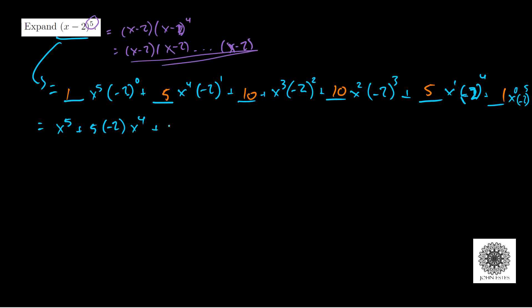Then I have 10 times (-2) squared which is 4, times x cubed. Then I have 10 times (-2) cubed which is -8, times x squared.